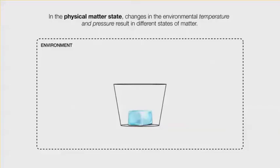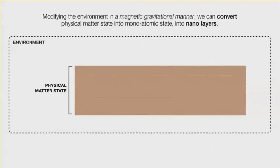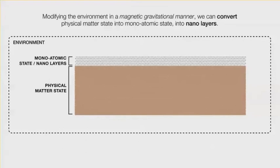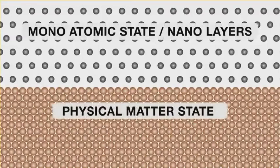In the physical matter state, changes in the environment — temperature and pressure — result in different states of matter. Modifying the environment in a magnetic-gravitational manner, we can convert physical matter state into monoatomic state into nano layers. You can see the physical matter and the monoatomic state nano layers.